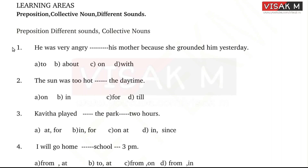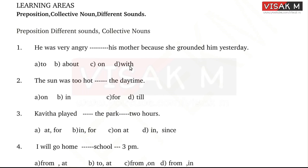Moving on to the first question: He was very angry, dash his mother because she grounded him yesterday. What is the preposition here? Options: A - to, B - about, C - on, D - with. He was angry with his mother because she grounded him yesterday. So the preposition here is 'with.'